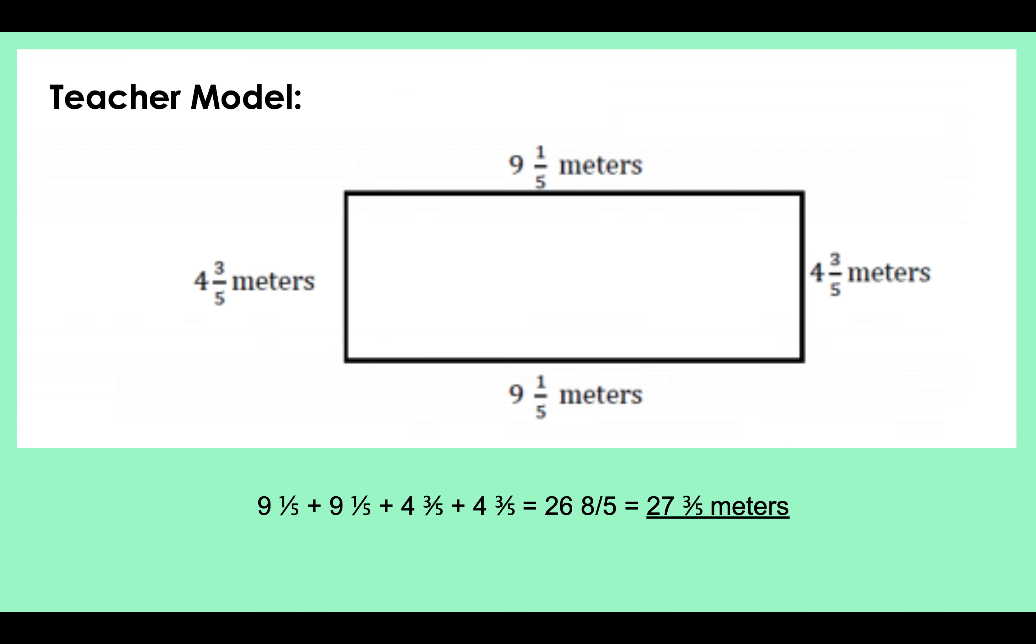Teacher model: We need to find the perimeter of this rectangle. Remember, perimeter is when you add all four sides together. There will always be four numbers that you need to add together, not one, not two, not three, you need four numbers to add together. So nine and a fifth plus nine and a fifth plus four and three fifths plus four and three fifths. I also know that opposite sides are equal. When I add all of these numbers together, I get 27 and three fifths meters.